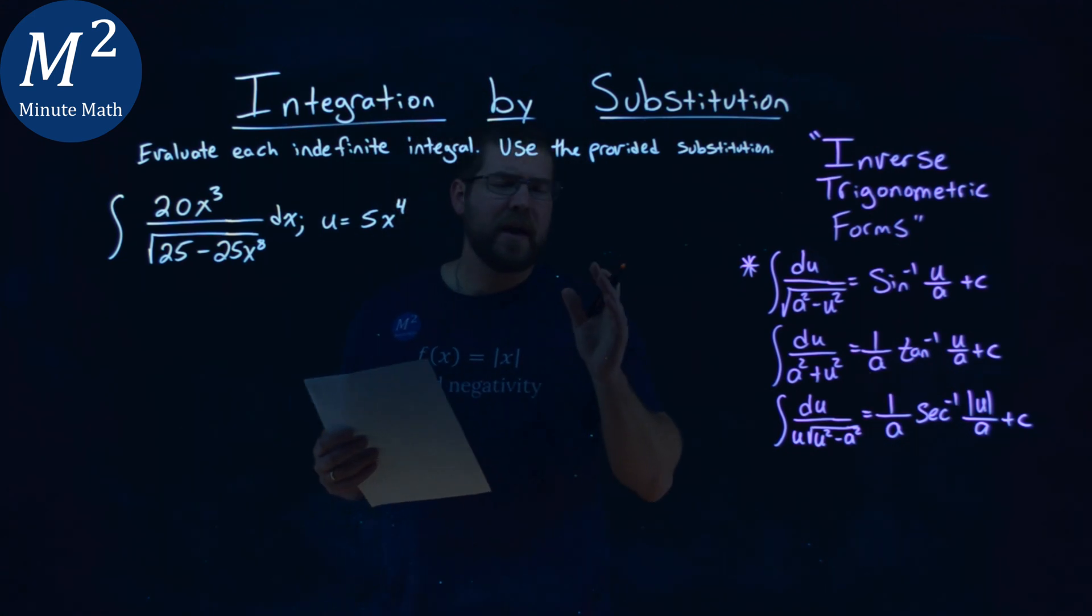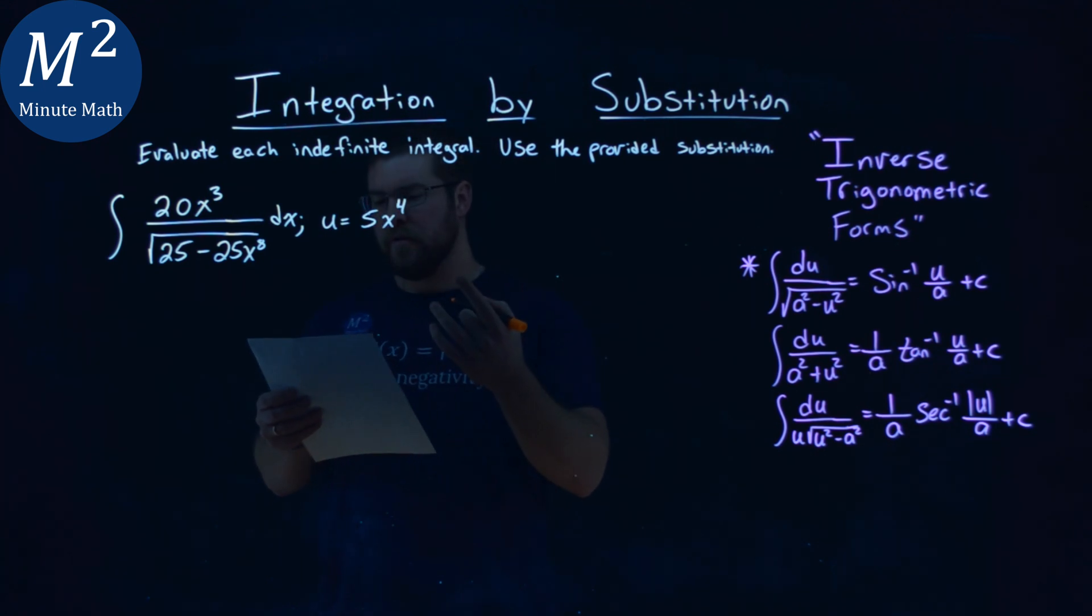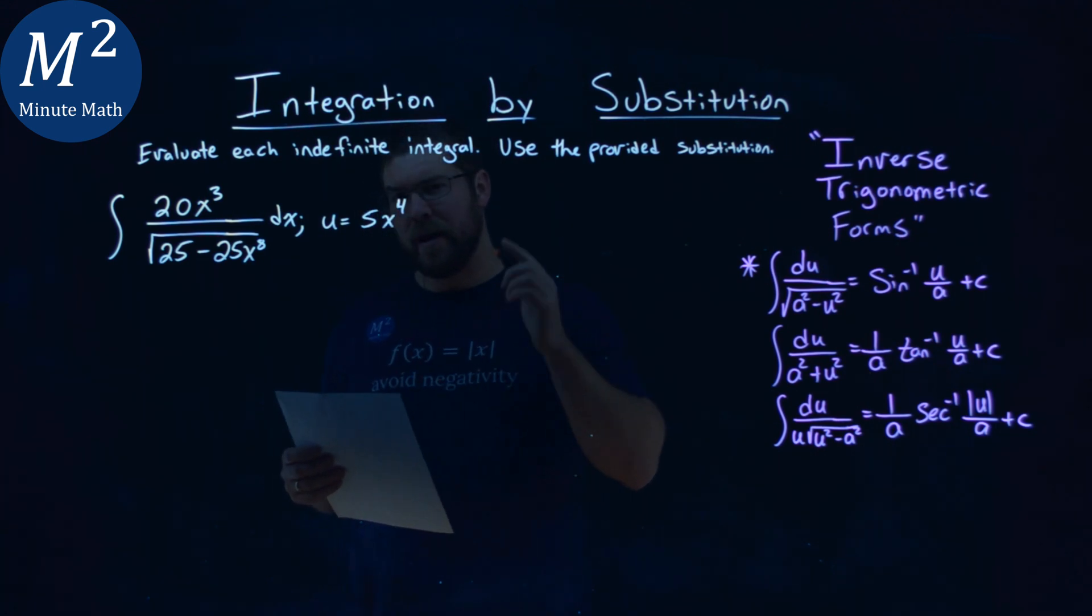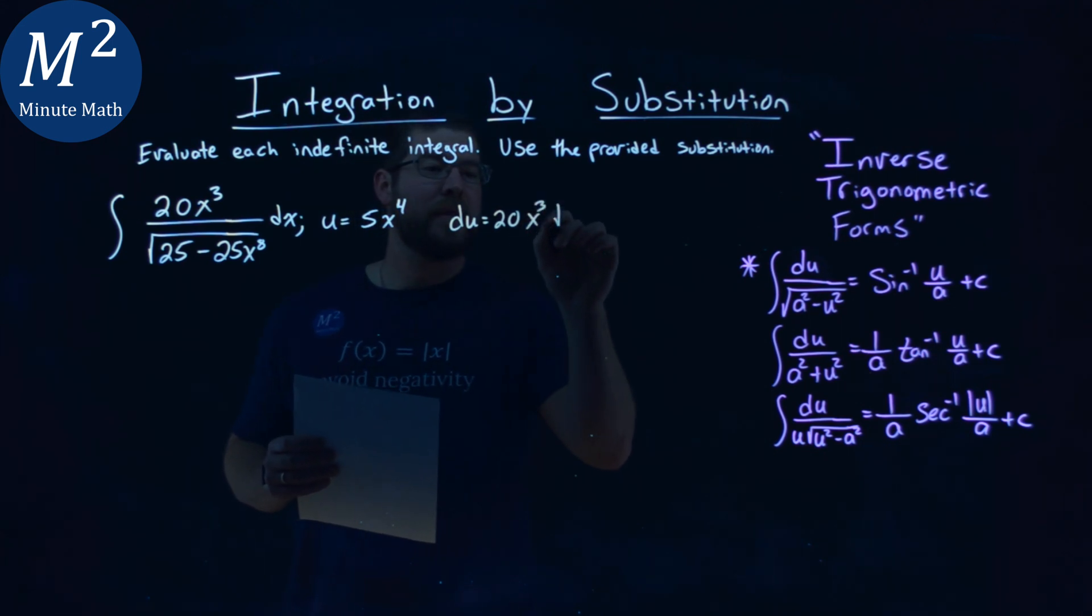Now, one thing I want to do is I want to find my du. They gave us the u value, we want to find the du value, the derivative there. So, a du value here, derivative of that is 20 - the 4 comes down, multiply by 5 - x³ dx.